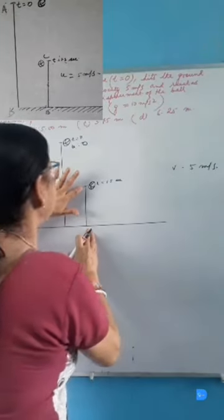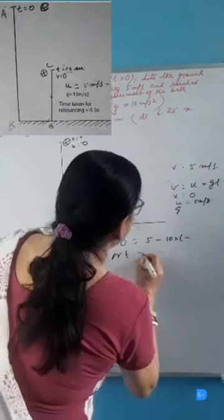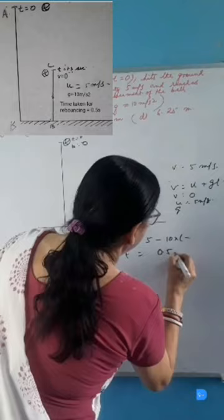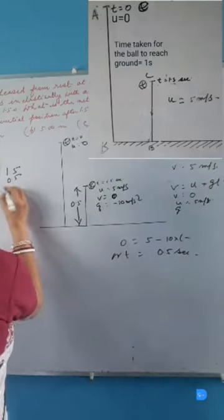We find the time taken for the ball to rebound. We will use the formula v = u + gt. t = 0.5 second. So, the time taken for the ball to reach the ground is 1 second.